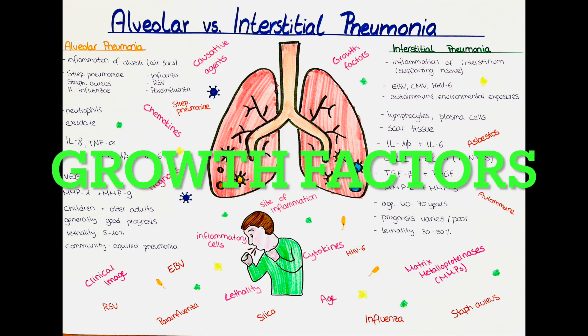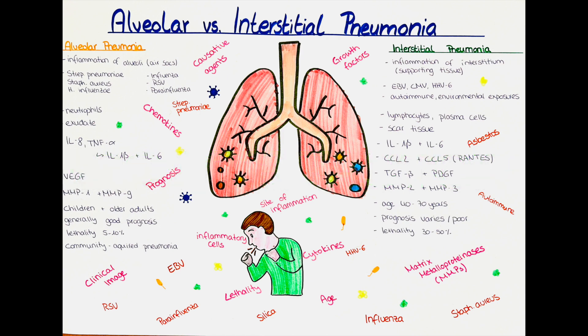Which are the important growth factors? VEGF, also known as vascular endothelial growth factor, is a growth factor important in angiogenesis — the formation of new blood vessels — that occurs in alveolar pneumonia. It helps to deliver oxygen and nutrients to the inflamed alveoli. TGF-beta, also known as transforming growth factor beta, and PDGF, also known as platelet-derived growth factor, are growth factors important in the fibrosis that occurs in interstitial pneumonia. TGF-beta stimulates the production of scar tissue, while PDGF stimulates the growth of fibroblasts, the cells responsible for producing scar tissue.